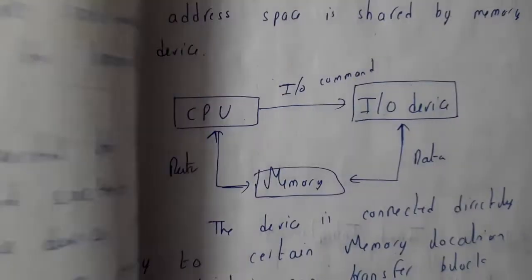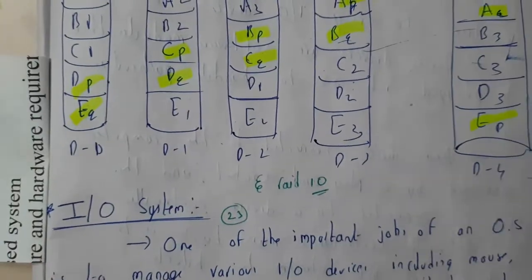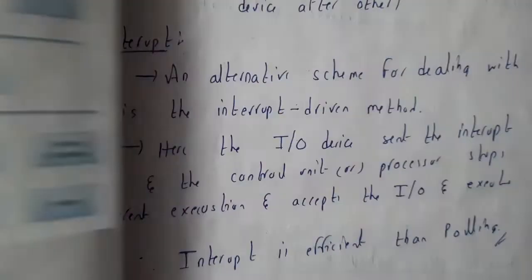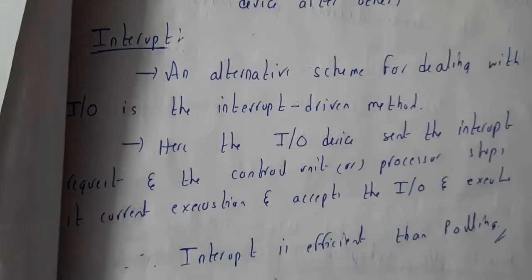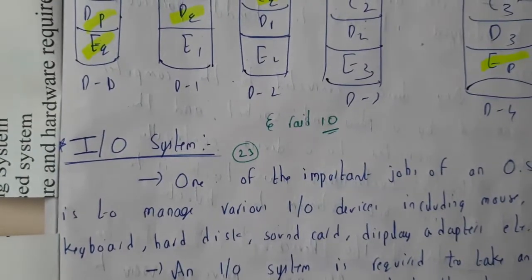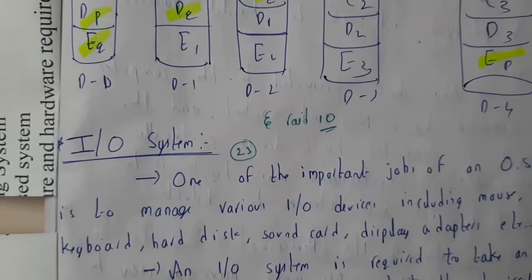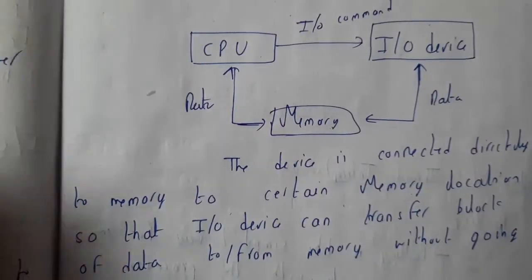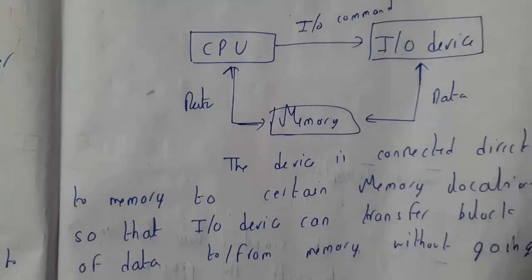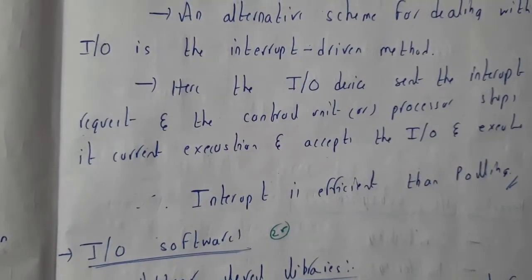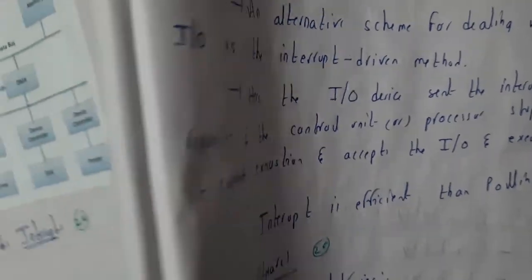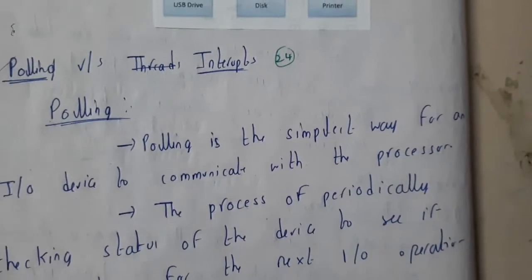I hope everyone got a small idea on RAID. In the next tutorial we will be talking about the differences between polling and interrupts. IO systems have already been discussed in some other subjects, so you can refer to those notes — topics like DMA, input/output devices are covered there. In the next tutorial we will be going through polling and interrupts. Thank you, thanks for watching.